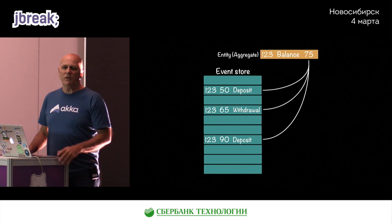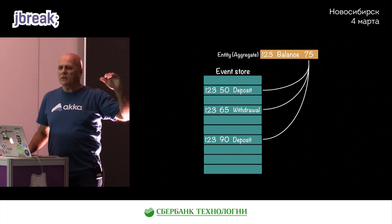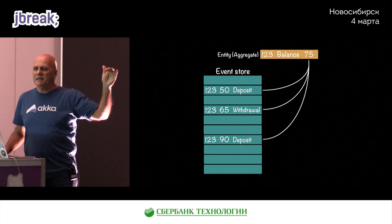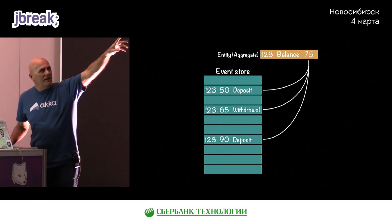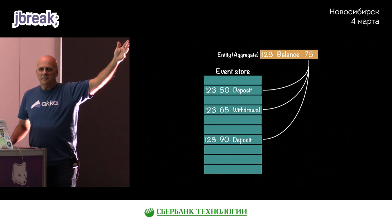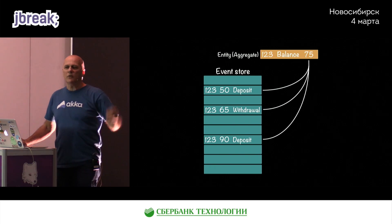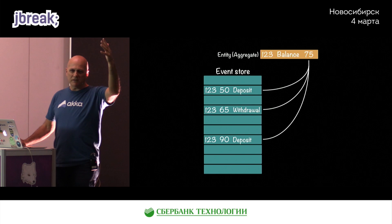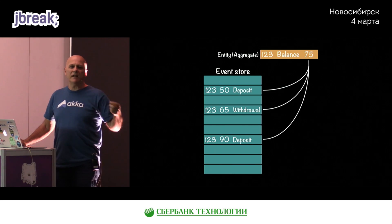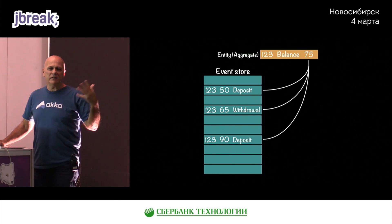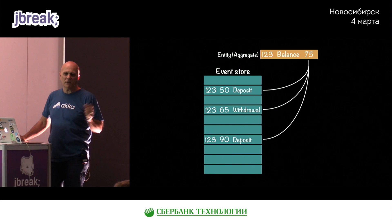Here's a simple example of the event store. We're storing the entity ID, the amount, and the type of event — a deposit event, a withdrawal event, another deposit event. The aggregate, derived from the events, is the current balance. One question you may have is: with a bank account you can have a very long history, and you don't want to replay all of it when recovering state. That's why there's the concept of snapshotting — you periodically save the state of the entity, and when recovering, you go from the last snapshot forward. It's a relatively easy optimization to implement.